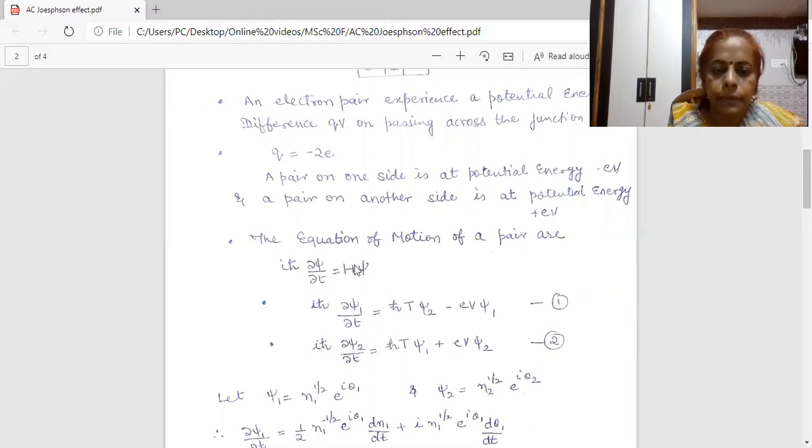It represents the interaction of first junction with second and similarly, that of second with first. ψ is the probability amplitude. First of all, I am writing my expression for first junction. For first junction, the expression will be iℏ dψ₁/dt. In spite of ψ, I have to write ψ₁, capital H, ℏT. And since interaction of first takes place with the second. Therefore, I have to use the probability amplitude of second junction which has a value ψ₂.